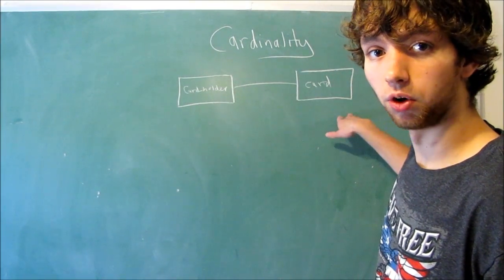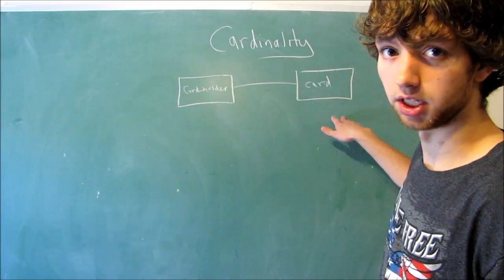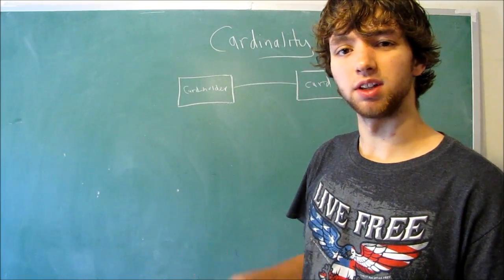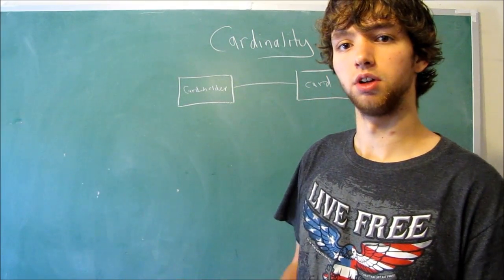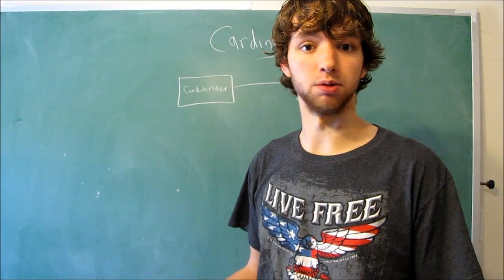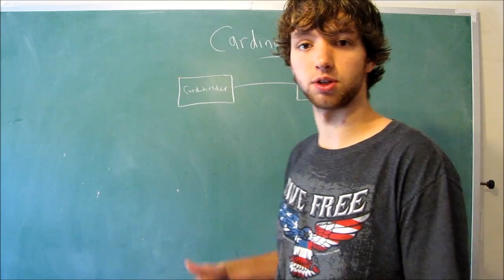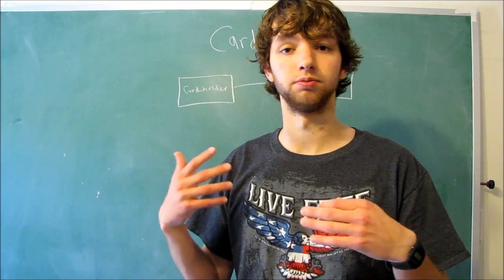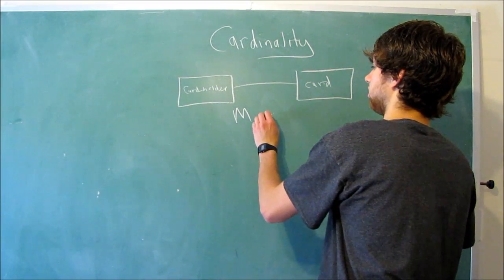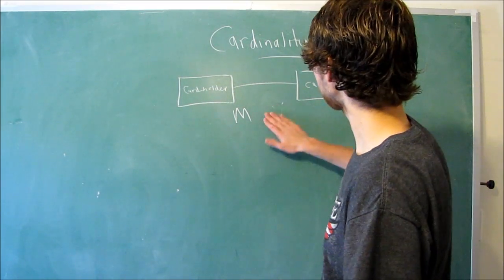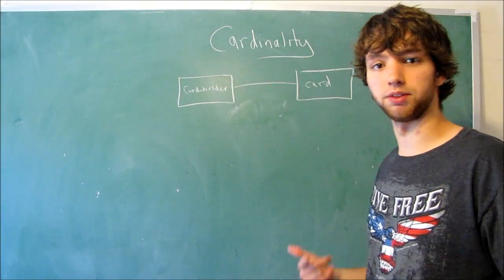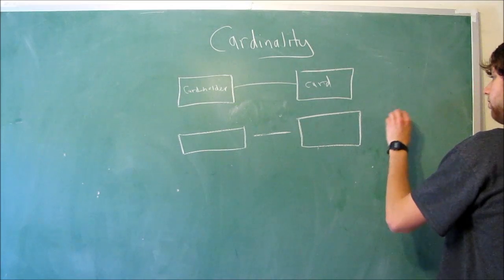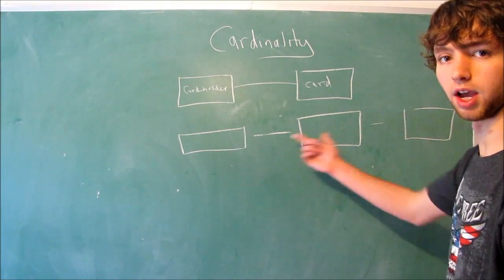So you can have one-to-many, one-to-one, or many-to-many — those are the only three possibilities. When it comes to many-to-many, you might consider that as not a real possibility because you'd have to have an intermediary table, which we talked about when we discussed designing many-to-many relationships. When we're drawing it logically, we draw it as many-to-many. But when we actually implement it in a database, we would have a card holder table, a card holding table, and then the cards table.